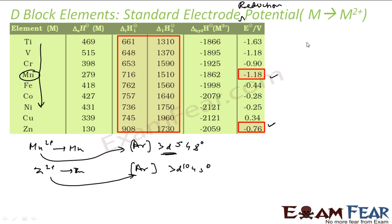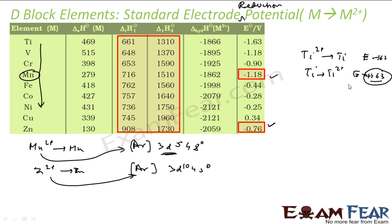A higher negative value of standard electrode potential implies easier oxidation. For example, for titanium: Ti²⁺ → Ti has E = minus 1.63 V. If you reverse the reaction — Ti → Ti²⁺ — E becomes plus 1.63 V. Since this is positive, the reaction is easy. This implies that oxidation of titanium is easy — you are oxidizing it, taking out electrons. So the more negative the standard electrode potential, the easier the oxidation of the metal.